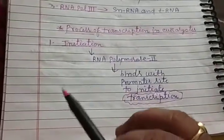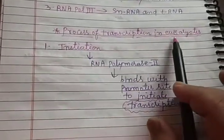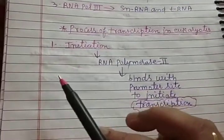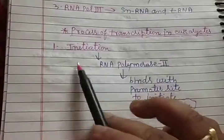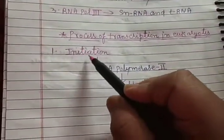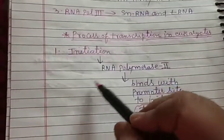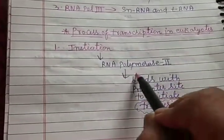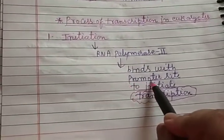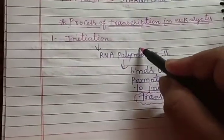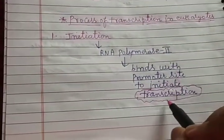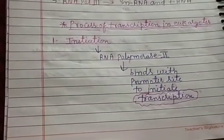In eukaryotes, there are six initiation factors that help RNA polymerase bind to the promoter site. The promoter site is the initiation site — when RNA polymerase II binds to the promoter site, transcription is initiated.